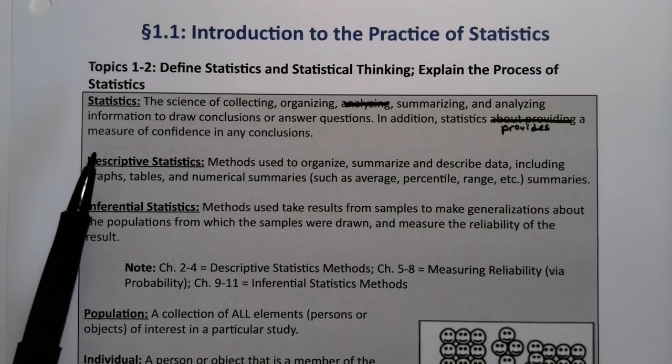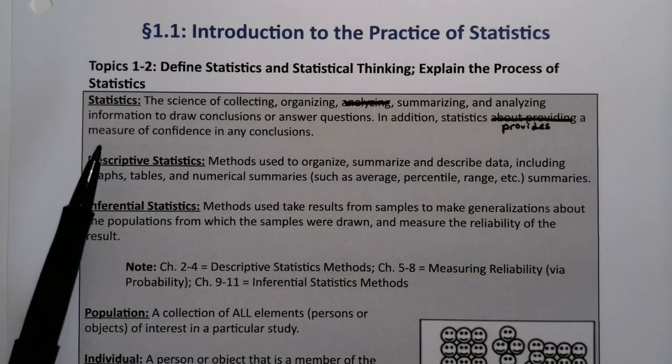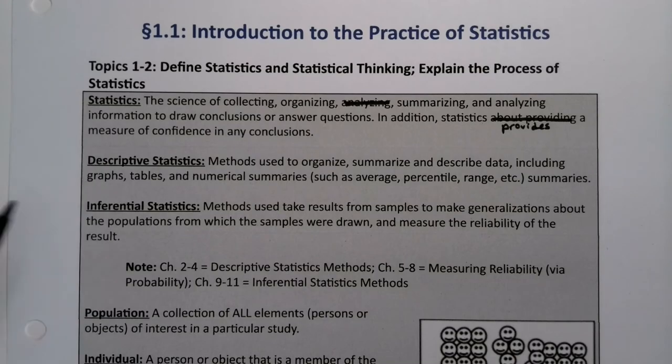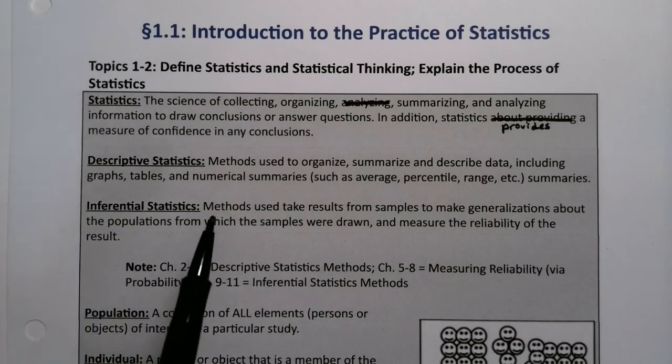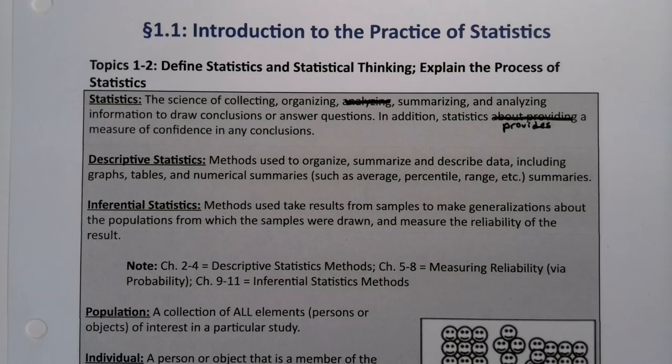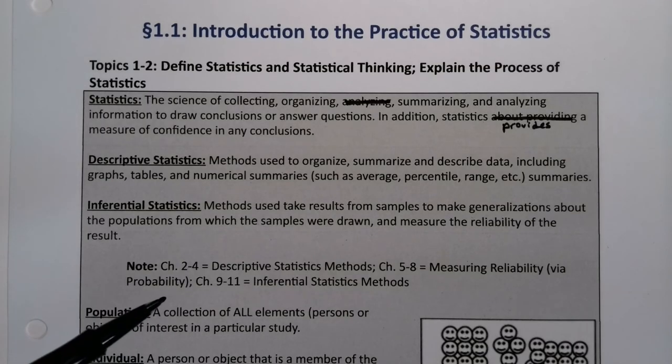That confidence we will talk about later in chapters 9, 10, and 11 - that's really talking about margin of error and inferential statistics. The course and topic is broken up into a couple major subfields: descriptive statistics and inferential statistics. Descriptive statistics are methods used to organize, summarize, and describe data including graphs, tables, and numerical summaries. When you hear somebody say the average exam score or I was in the 70th percentile, that's descriptive statistics. That's the earlier chapters of the course, chapters 2 through 4 in particular.